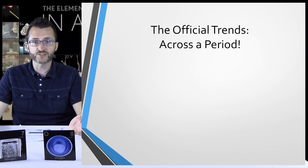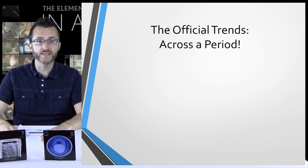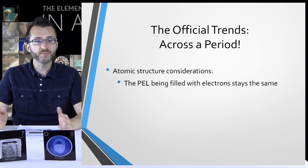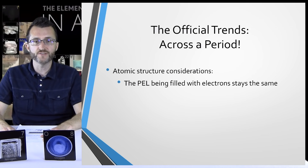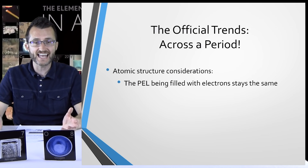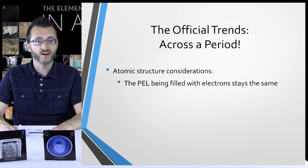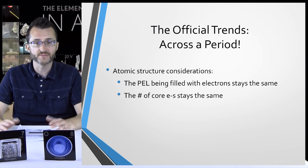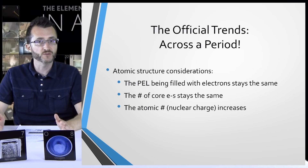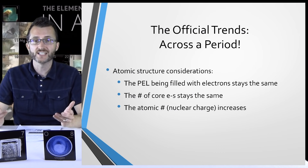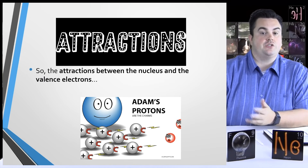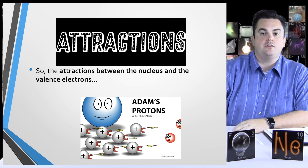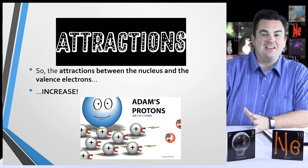Now we're going to go across a period, looking at atomic structure again. This time, the principal energy level being filled stays the same. Also, the number of core or shielding electrons stays the same. But the atomic number — which we can also call nuclear charge — increases. So the attraction between the nucleus and the valence electrons increases.